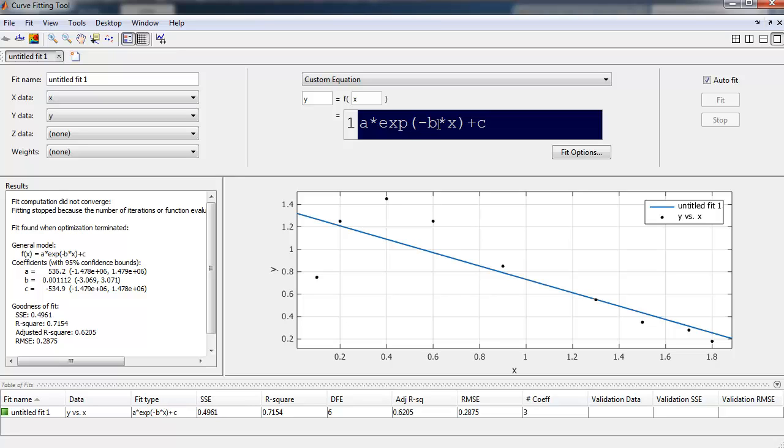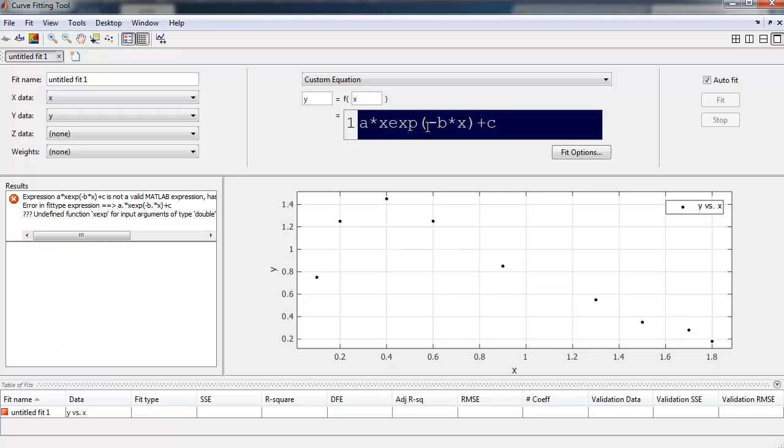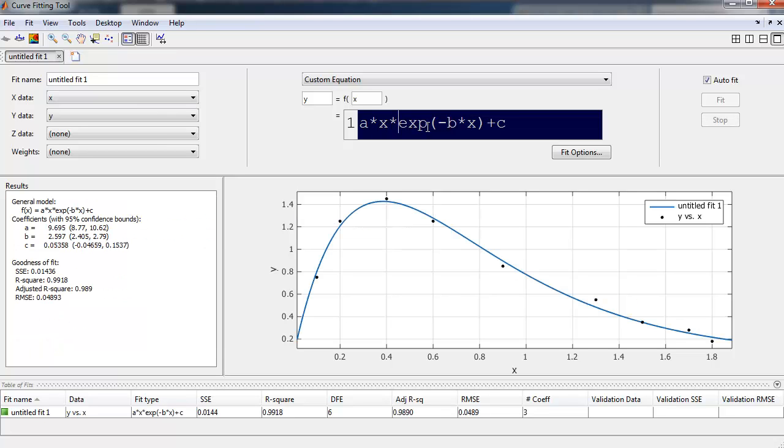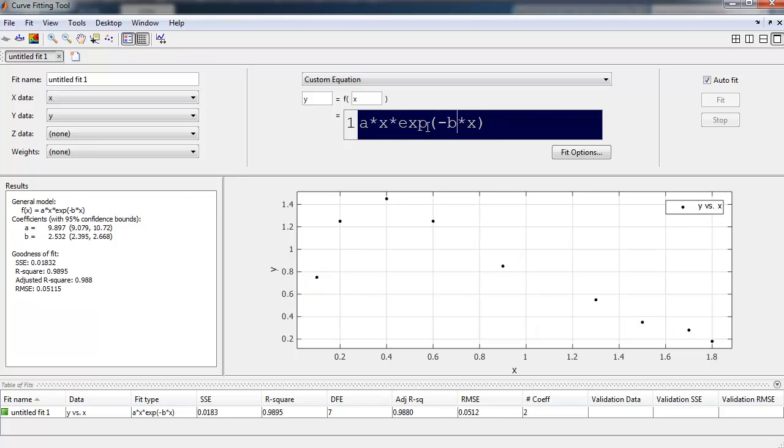a times x times e to the bx, and it wasn't negative bx, I think it was positive bx. Yeah, it was positive bx, and so we can just say that's our custom fit.